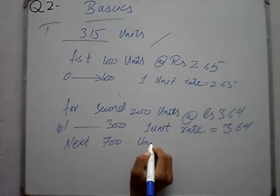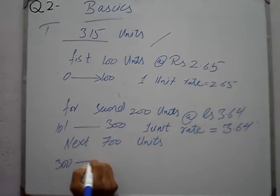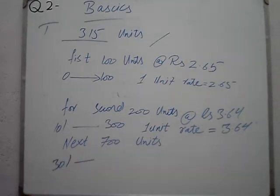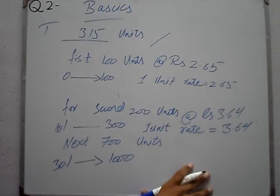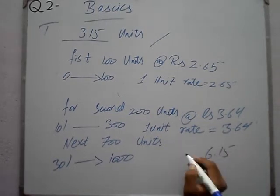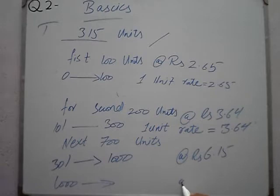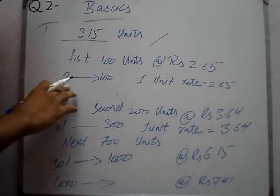Next 700 units — next 700 units means from 301 onwards. From 301 to 1000, the rate is Rs 6.15. Above 1000 units, the rate is Rs 7.41. So these are the rate tiers. Now, for 315 units — what is the rate for the first 100 units?